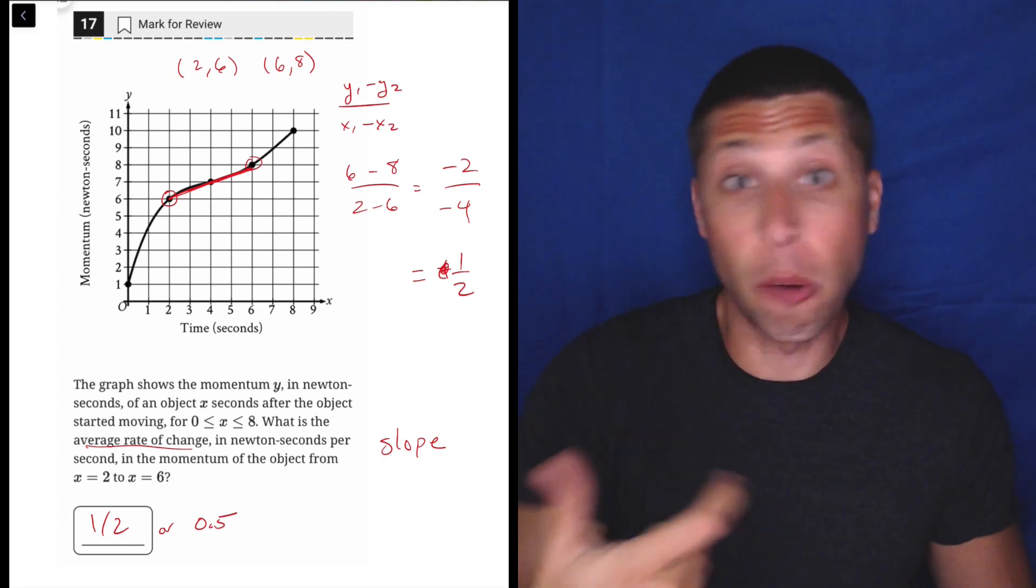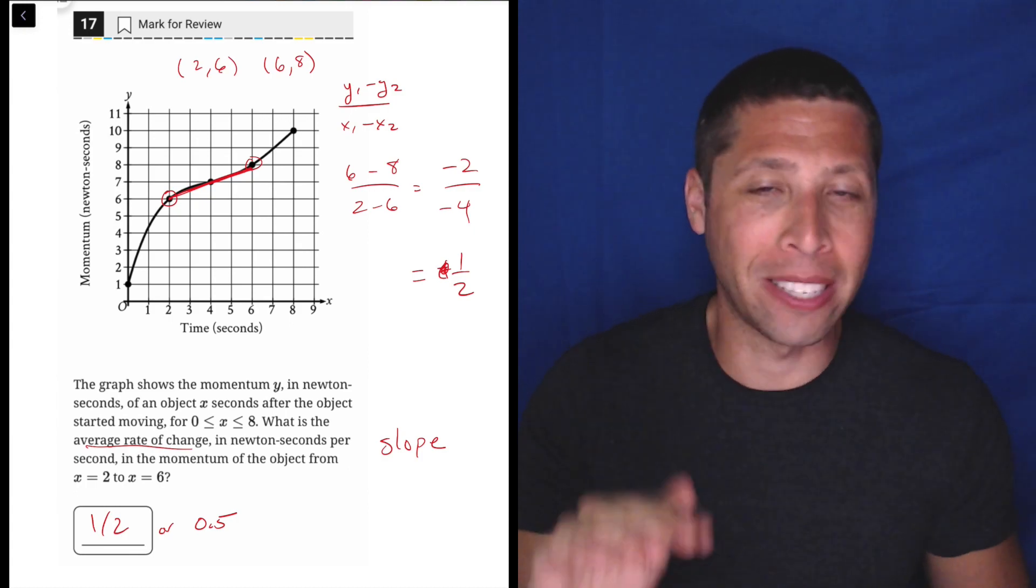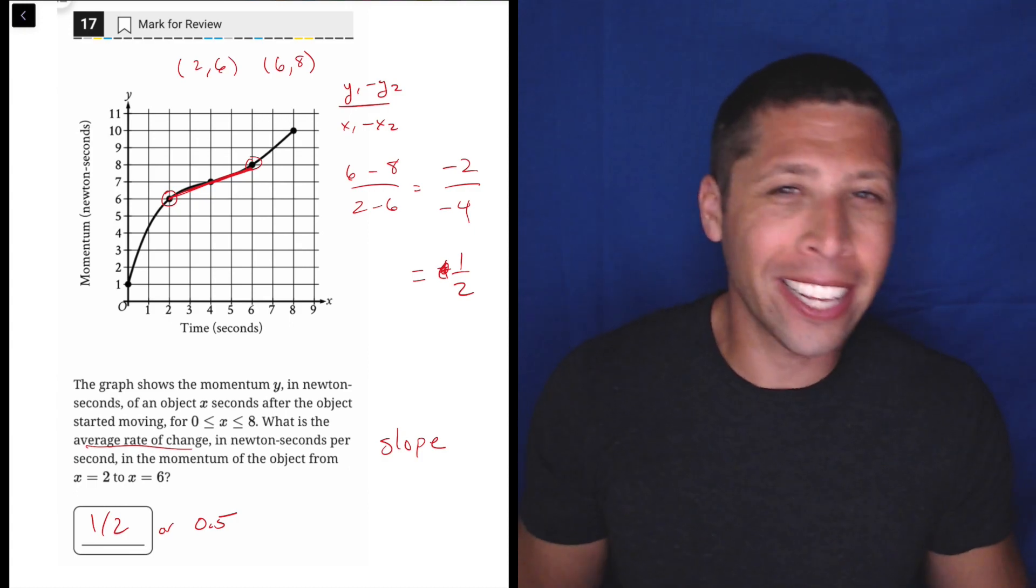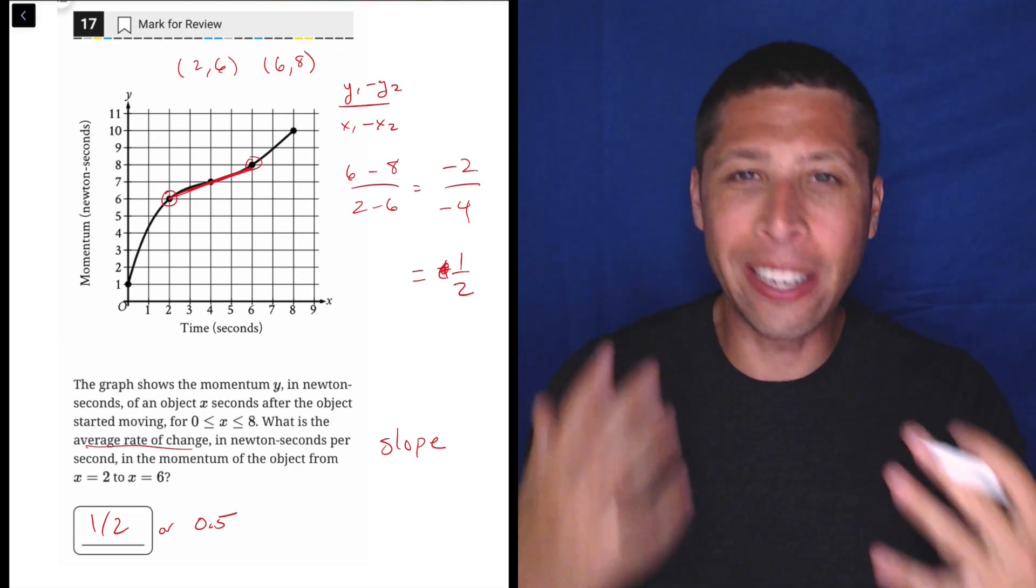I thought I had flipped the x and the y, or put the x coordinates on top, and then I almost lost the double negative to positive. Those are things I do all the time. I always mess up slope formula - it's just a lot of negatives and numbers and they all have to go in the precise place.